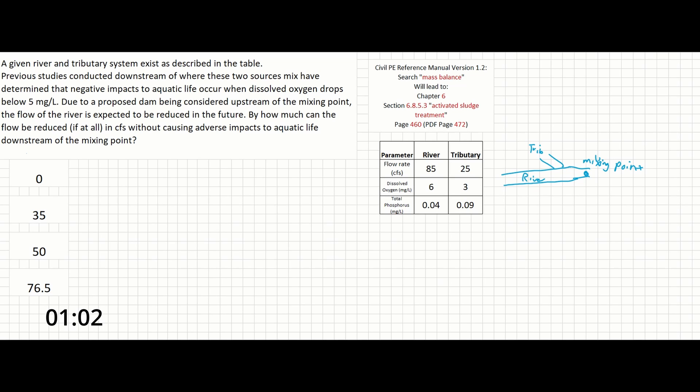This problem is a pretty basic example of a mass balance problem that you would find in an undergraduate environmental engineering class. I don't think there's an equation for it in the reference manual. The closest I found was on page 460. If you want to see an example of what a mass balance equation for a slightly different application might look like, the version of the mass balance equation that we want to use can instead be written as follows.